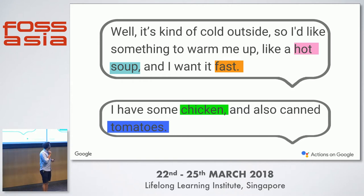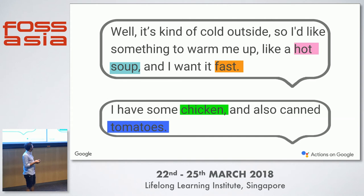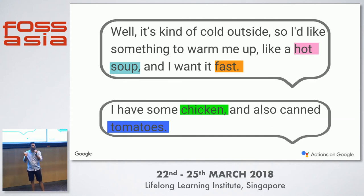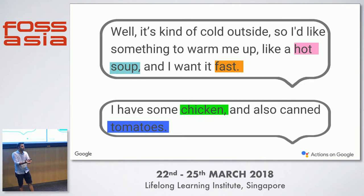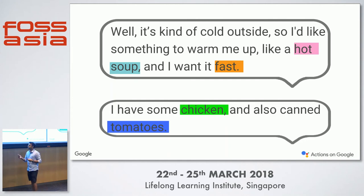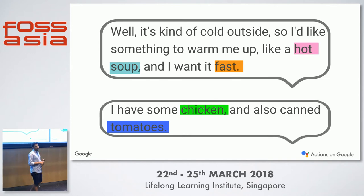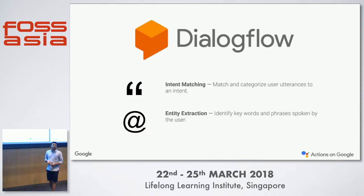And here is another case: 'I have some chicken and also some canned tomatoes.' He is talking about two different things — tomatoes and chicken — both essential to the soup, but one is a protein and the other is more of a flavor. We want to understand which plays a bigger role. It is an inherently complex task, and that is why Google acquired a company called Dialogflow — originally named API.AI.